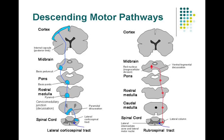The subcortical structures may be the reticular formation, the reticular nucleus, or the tectum. Depending on from where it arises, it will be named as such. These pathways on the left, which are called pyramidal pathways originating from the motor cortex, are basically two types: one is the lateral corticospinal tract and the other is the anterior corticospinal tract.